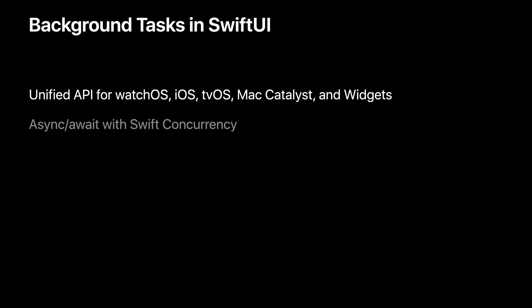Utilizing Swift concurrency, the new API reduces the need for deeply nested completion handlers and callbacks, as well as much of the mutable state which was frequently a side effect. Swift concurrency's native task cancellation helps applications gracefully complete tasks in a timely way, to avoid being quit in the background by the system.